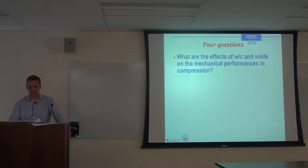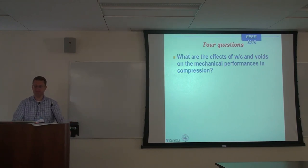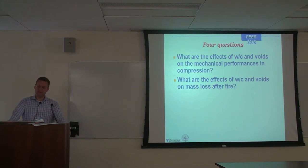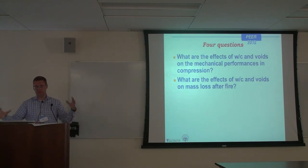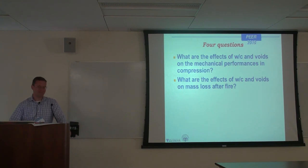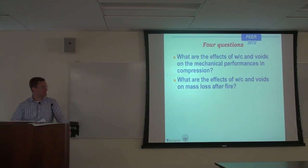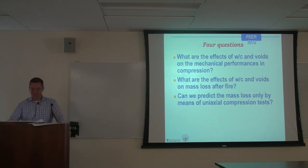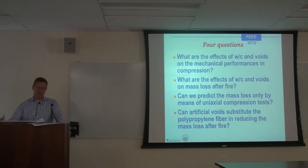Four research questions to be answered with this project funded by PEER. First: what are the effects of water-to-cement ratio and voids on mechanical performance and compression of concrete? Second: what are the effects of water-to-cement ratio and voids on mass loss after fire? As concrete is subjected to fire, it tends to lose mass and volume. Third: can we predict the mass loss only by means of uniaxial compression tests? And finally: can artificial voids within the mixture substitute the polypropylene fiber in reducing the mass loss after fire?